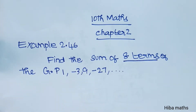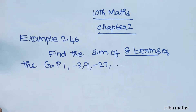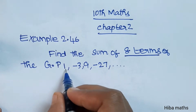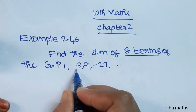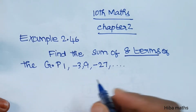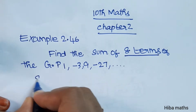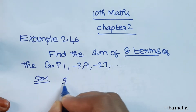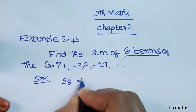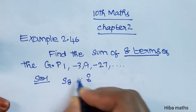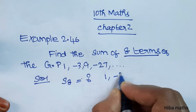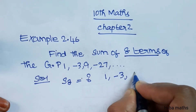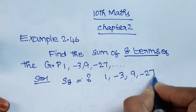We need to find the sum of 8 terms. The given series is 1, 3, 9, 27. The solution requires finding the sum of 8 terms of this geometric progression.